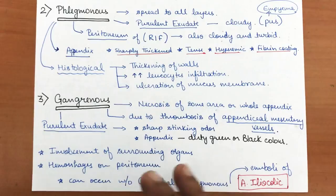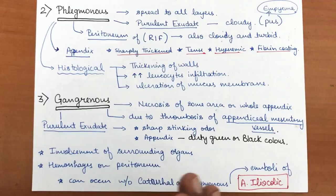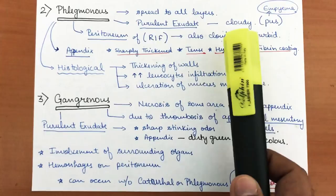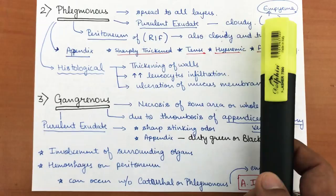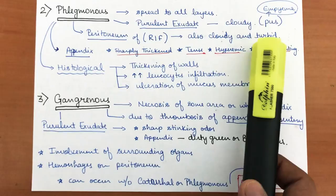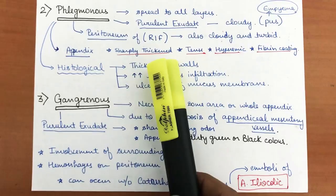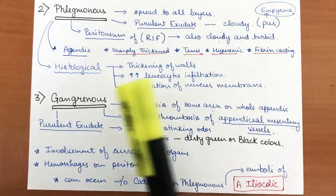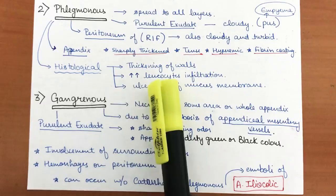Phlegmonous appendicitis usually follows the cataral stage — the inflammation spreads to all layers. Purulent exudate is formed, leading to empyema formation. The peritoneum of the right iliac fossa becomes cloudy and turbid. The appendix is sharply thickened, tense, hyperemic, and covered with fibrin coating. Histologically, there is thickening of the walls, increased leukocyte infiltration, and ulceration of the mucous membrane.